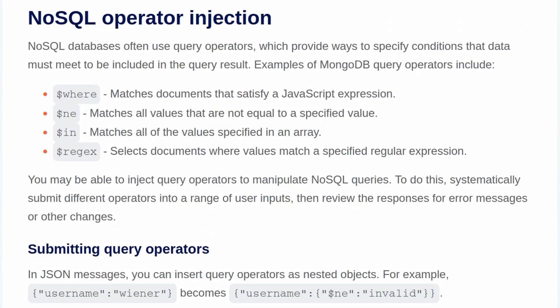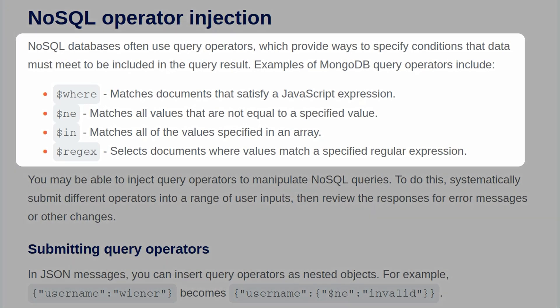We're going to go through the background information specific to this lab. NoSQL databases often use query operators, which provide ways to specify conditions that data must meet to be included in a query result. Examples of MongoDB operators include: where, which matches documents satisfying a JavaScript expression; ne, which matches all values not equal to a specified value; in, which matches all values specified in an array; and regex, which selects documents where values match a specific regular expression.